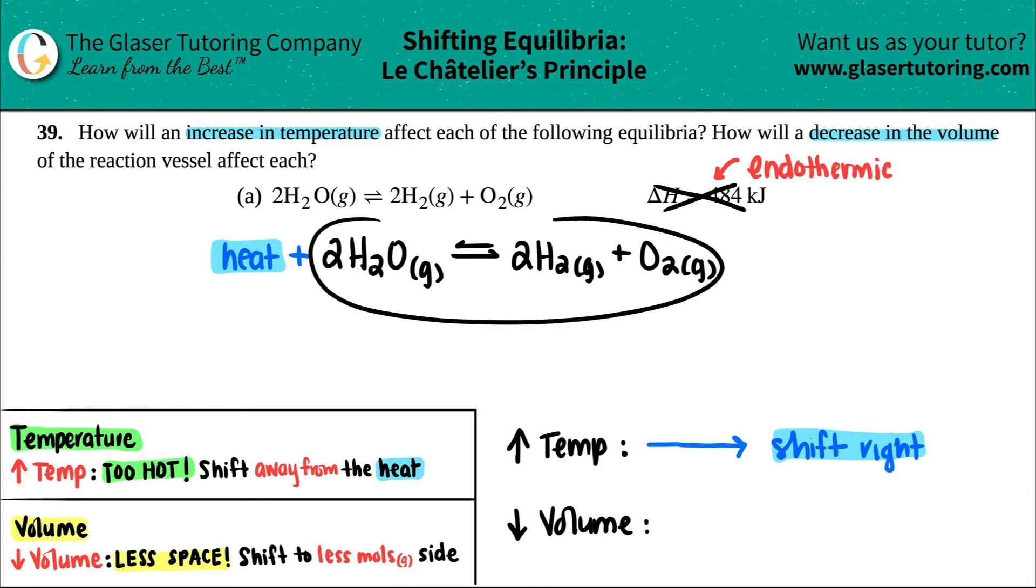So you always favor the side that has the less moles of gas. So that's when we just have to find out and tally up how many moles of gas are on the reactant side and the product side. Just be careful that you're only looking at the gases, but these are all gases. So I'm going to take all three of them.